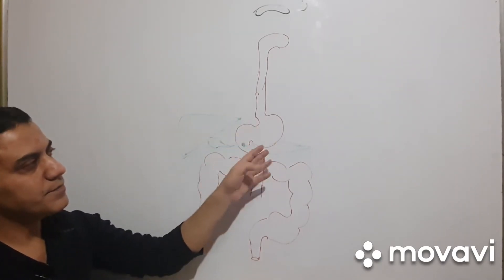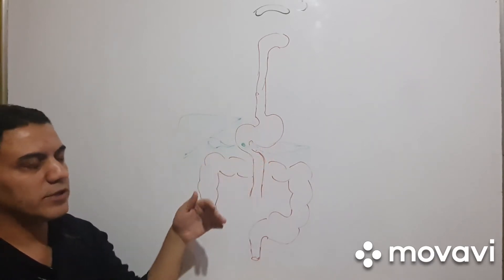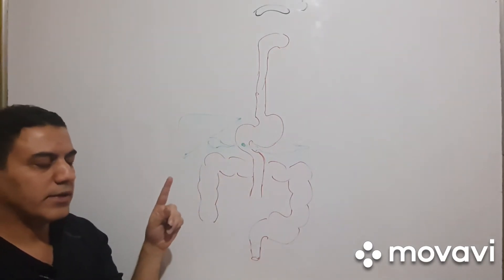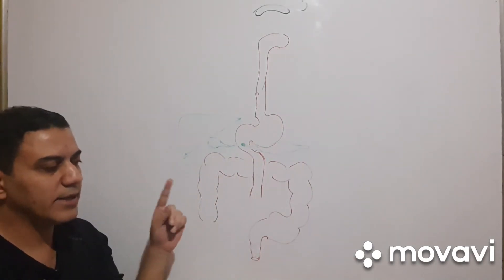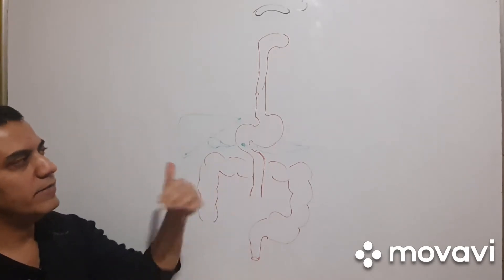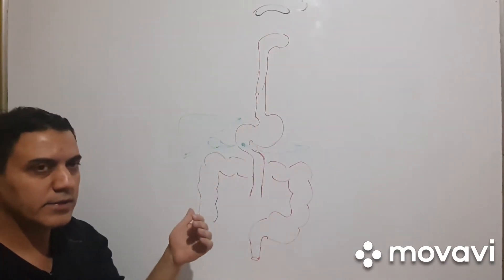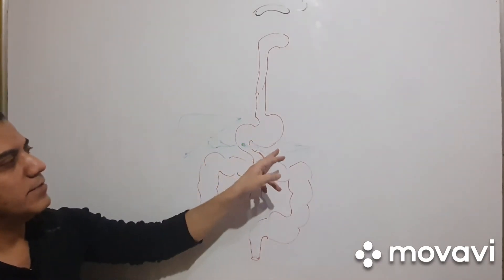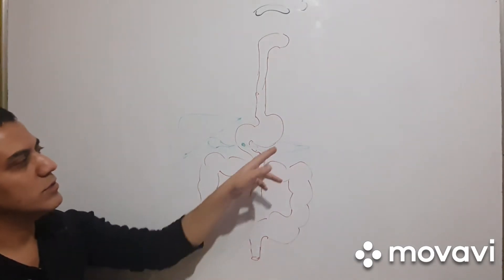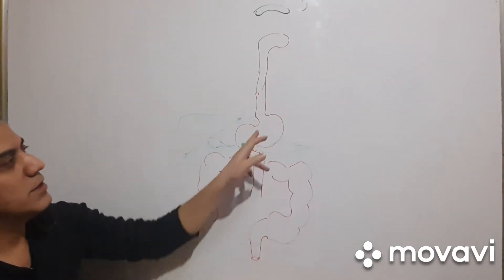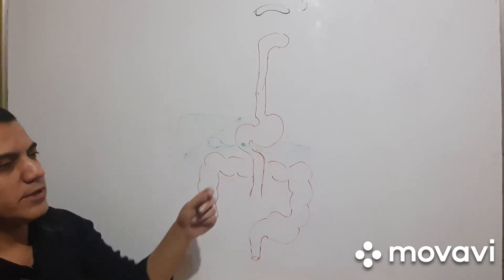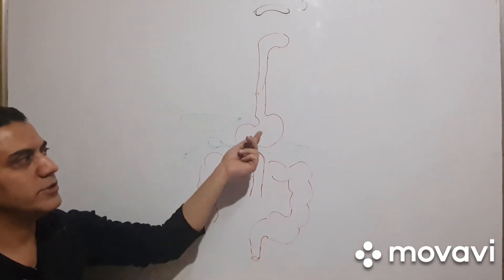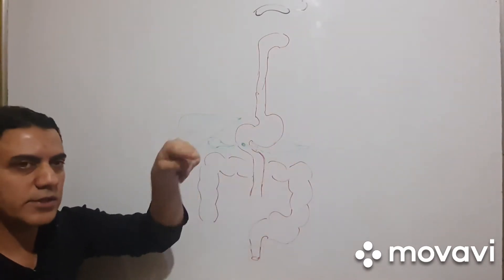In some cases we call hyposecretion, or complete absence of secretion, achylia. Stomach achylia or gastric achylia means no secretion of stomach juice. Pancreatic achylia means no pancreatic juice. In some cases we have just achlorhydria — meaning only HCl is absent: juice is present but HCl is absent.